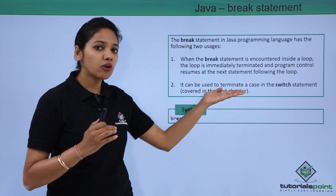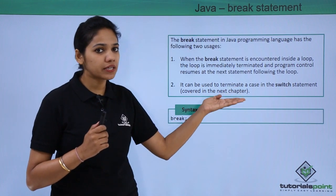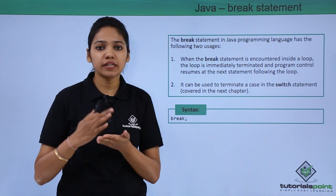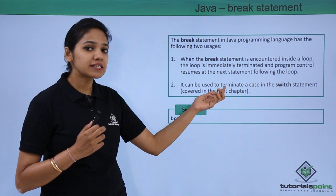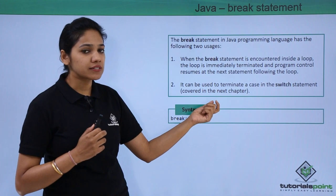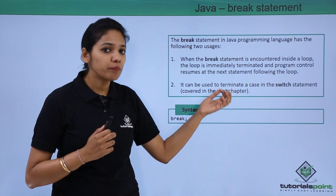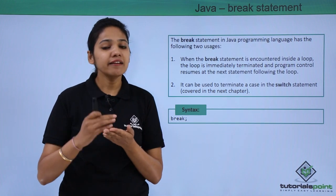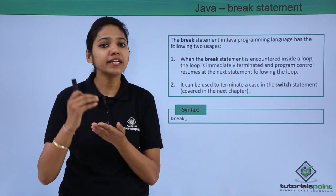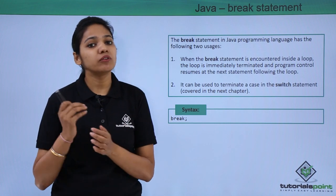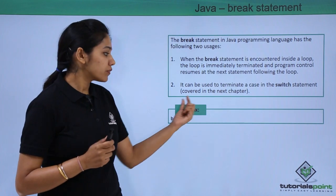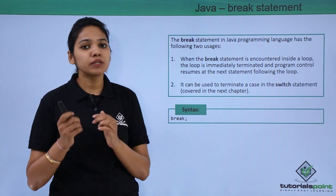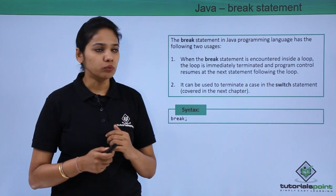In the case of a switch statement also, we can use a break keyword. We will look at what a switch statement does in the future, but a break keyword encountered in any of the switch cases will terminate at that time itself and jump to the next case. So the break keyword, followed with a semicolon, is used to terminate a loop.